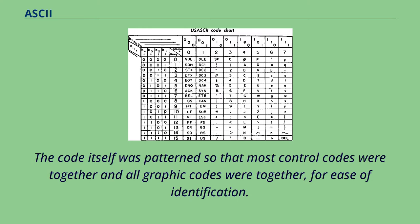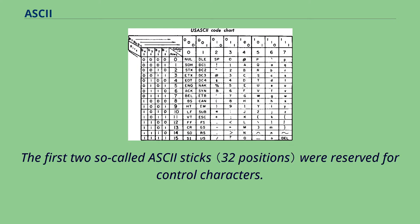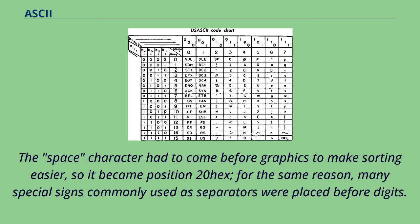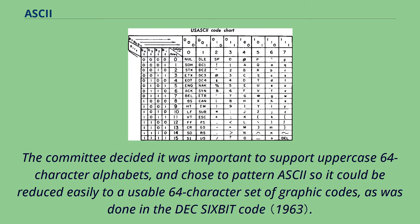The code itself was patterned so that most control codes were together and all graphic codes were together, for ease of identification. The first two so-called ASCII columns were reserved for control characters. The space character had to come before graphics to make sorting easier, so it became position 20 hex. For the same reason, many special signs commonly used as separators were placed before digits. The committee decided it was important to support uppercase 64-character alphabets, and chose to pattern ASCII so it could be reduced easily to a usable 64-character set of graphic codes, as was done in the DEC 6-bit code.